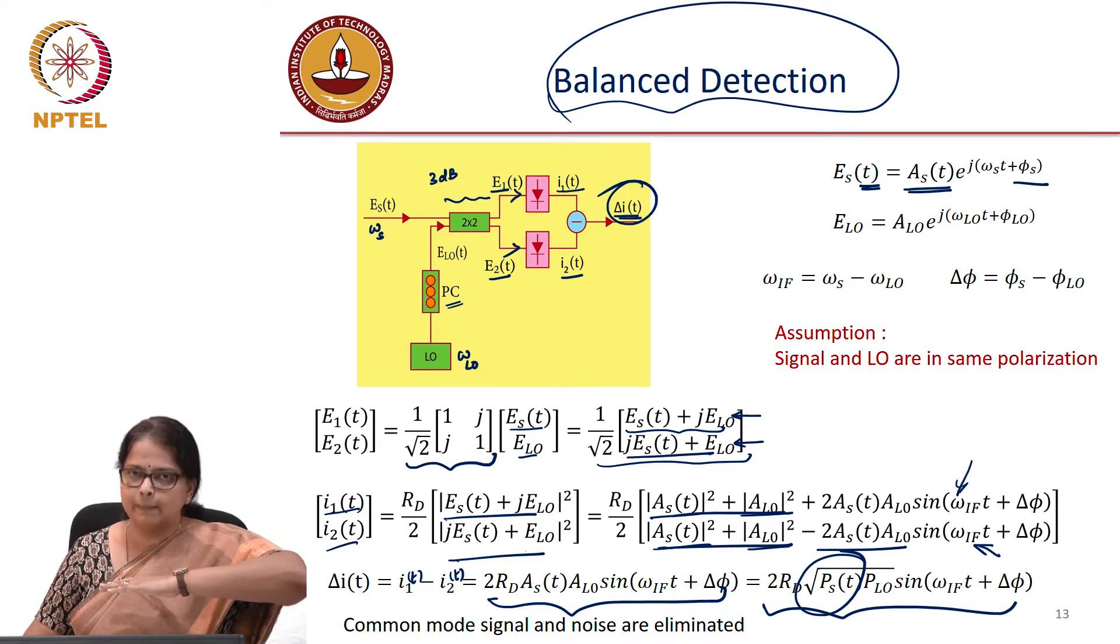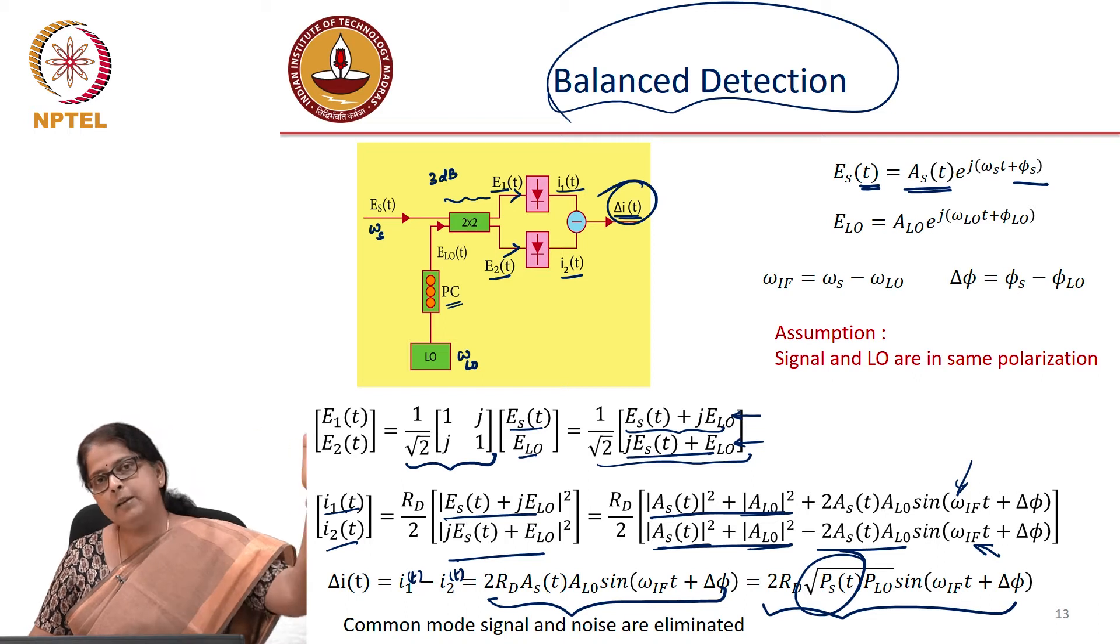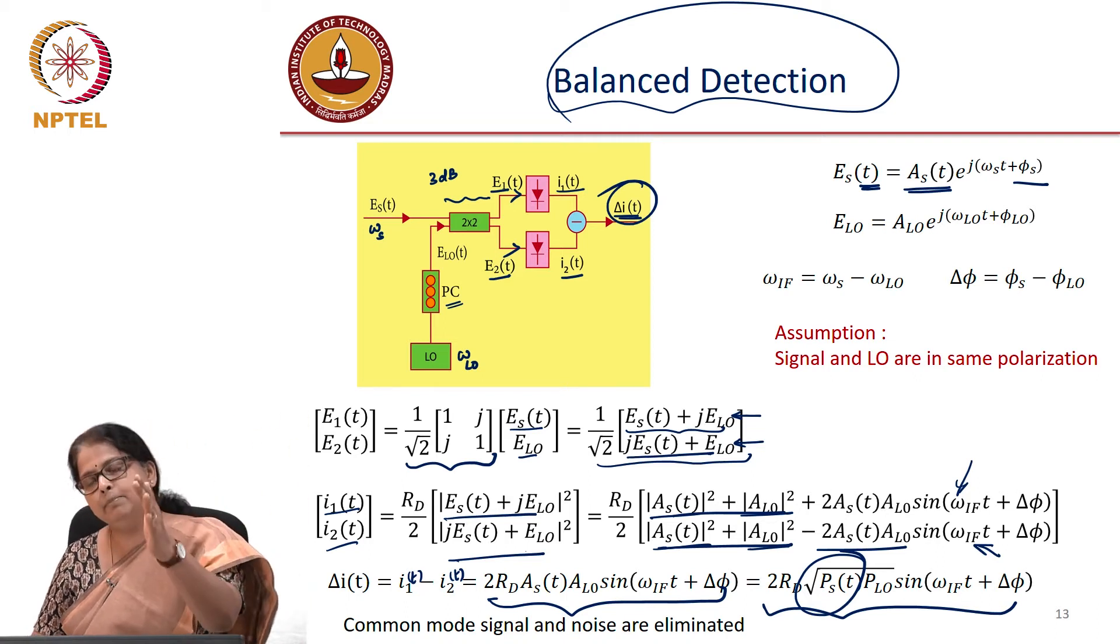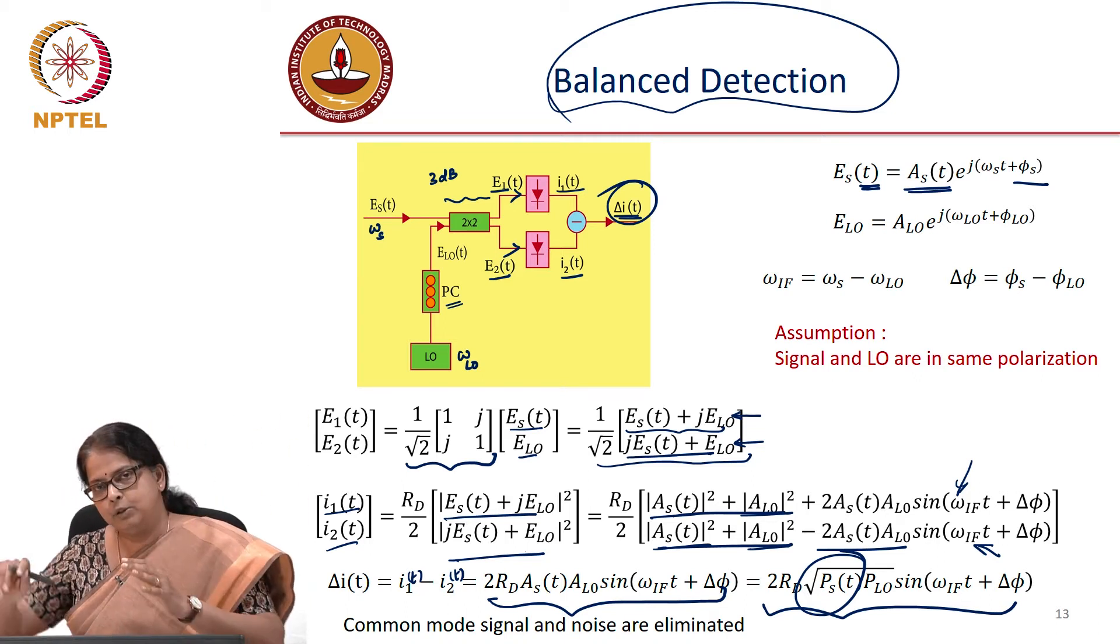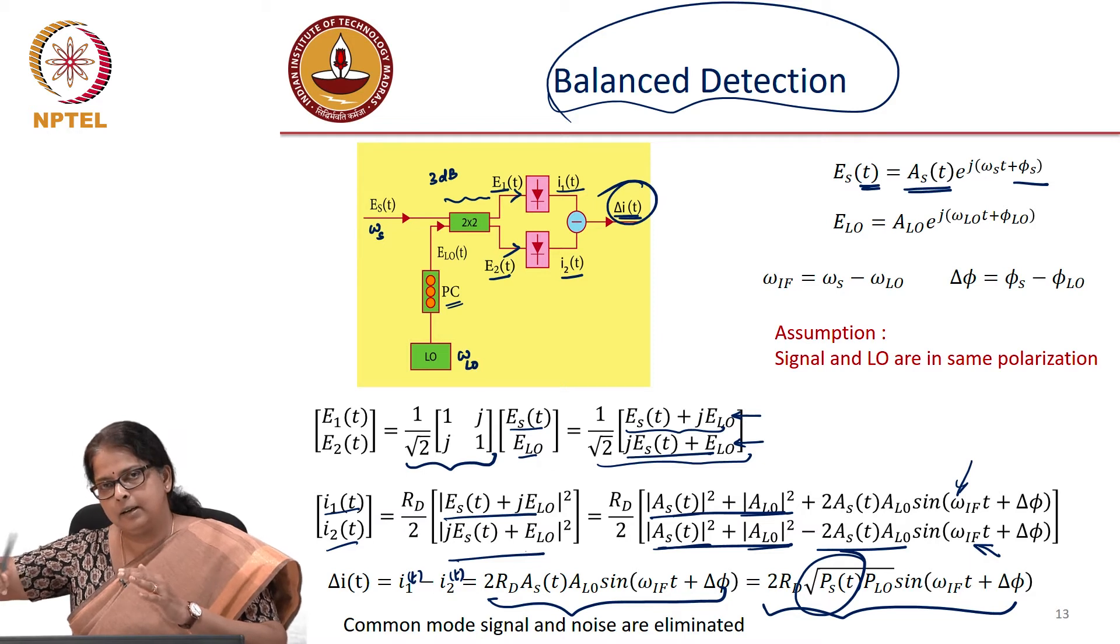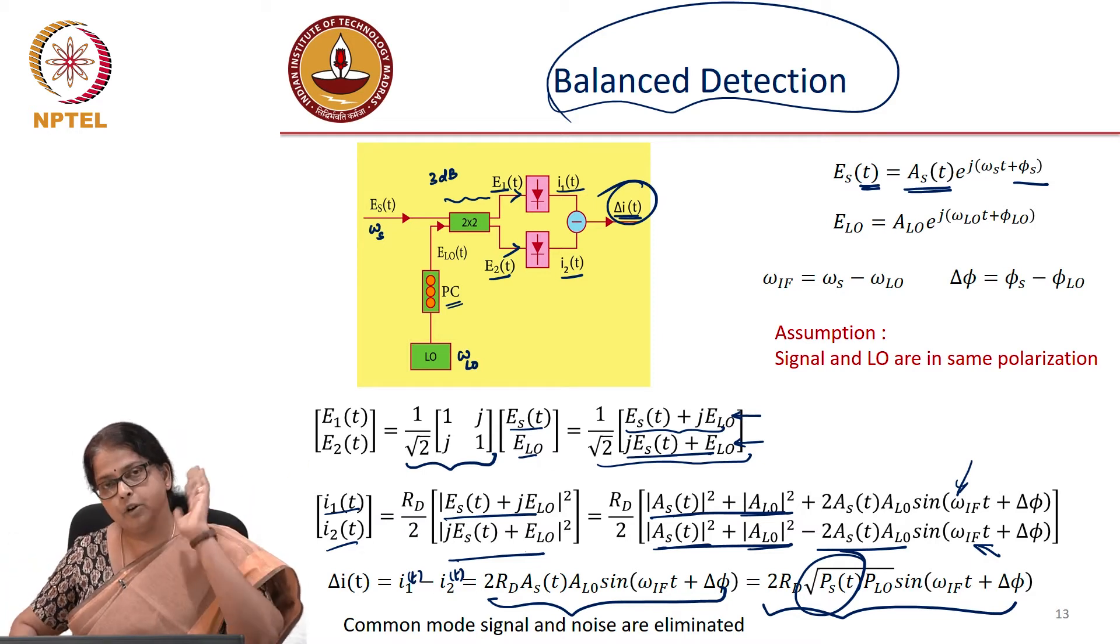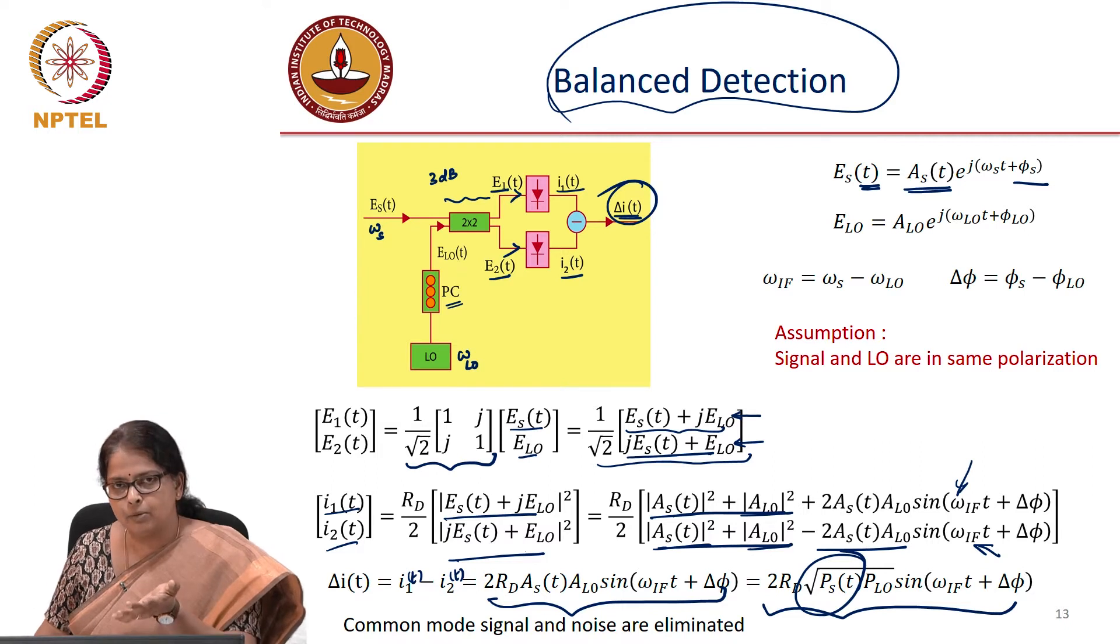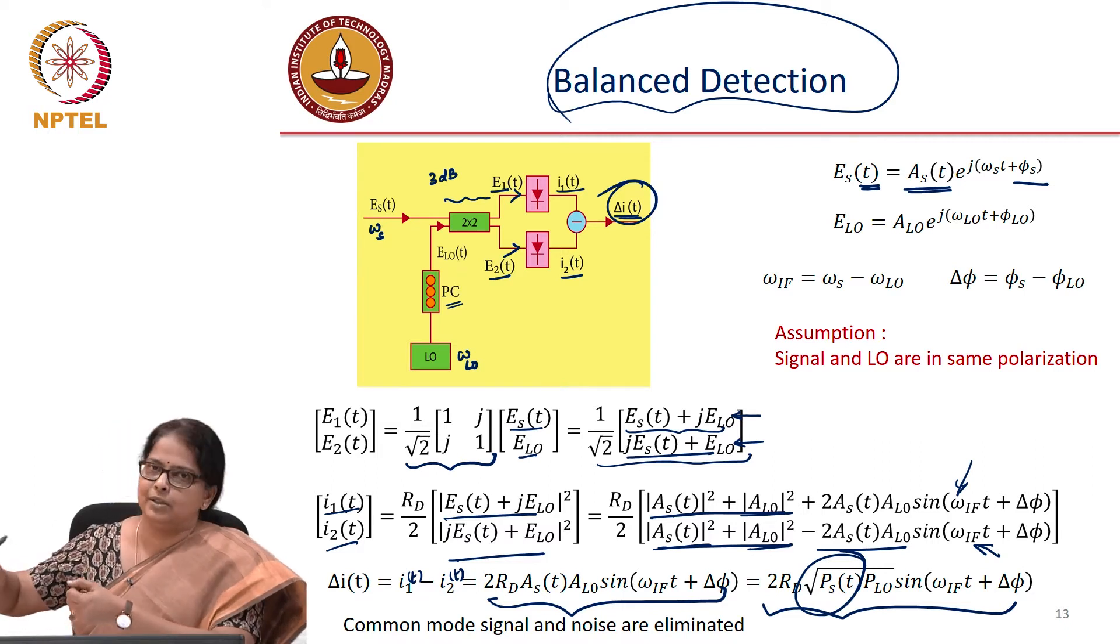Suppose I am doing polarization multiplexing or if my input has random polarization. Do I keep controlling my local oscillator output? If the input, what if my input polarization keeps fluctuating? How do I keep controlling my local oscillator output?